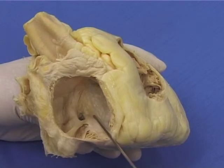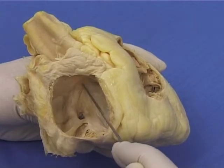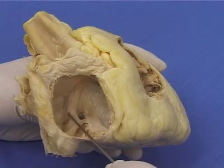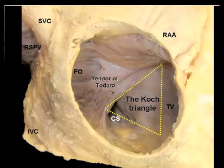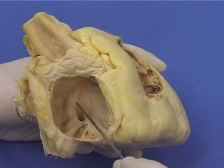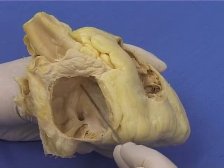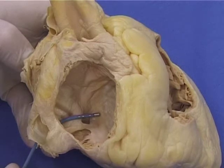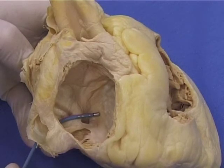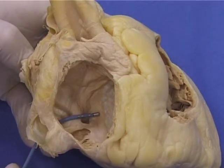The Koch triangle is formed by the fibrous ring of the tricuspid valve, the tendon of Todaro, and the coronary sinus ostium. The fast pathways go to the AV node along the tendon of Todaro. The ablation catheter is positioned immediately anterior to the coronary sinus ostium along the tricuspid annulus in order to decrease the risk of AV block or damage to the fast pathways.